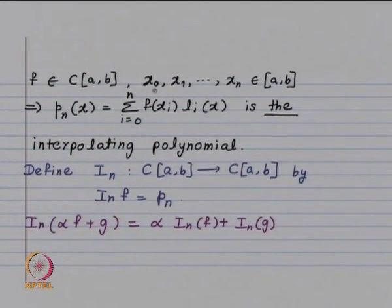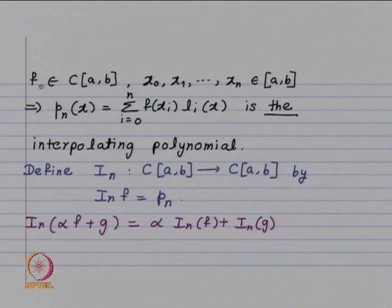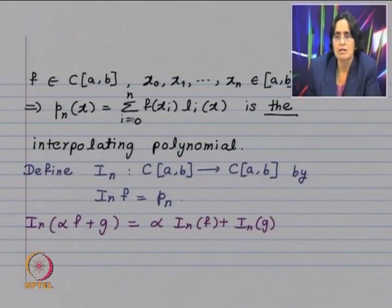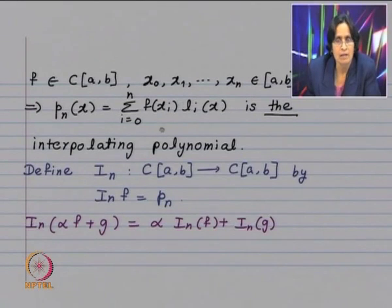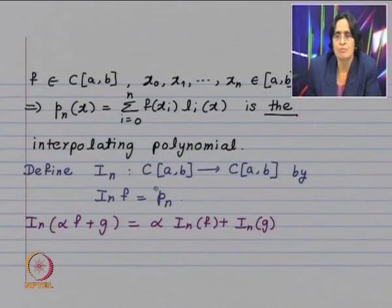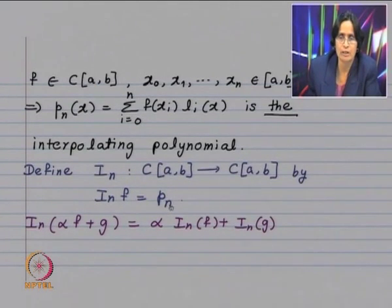We look at a continuous function defined on C[A,B]. x₀, x₁, ..., xₙ are n+1 distinct points in the interval [A,B]. We know that there is a unique interpolating polynomial which interpolates the given function at these points. That interpolating polynomial is given by the summation from i=0 to n of f(xᵢ)lᵢ(x) — this is the Lagrange form. Now consider the map Iₙ from C[A,B] to C[A,B] which associates function f to the interpolating polynomial.